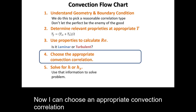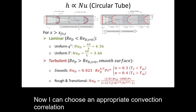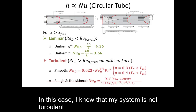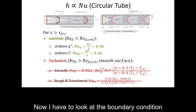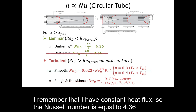Now I can choose an appropriate convection correlation. The flow is not turbulent, and looking at the boundary condition, I have constant heat flux — so the Nusselt number is equal to 4.36.